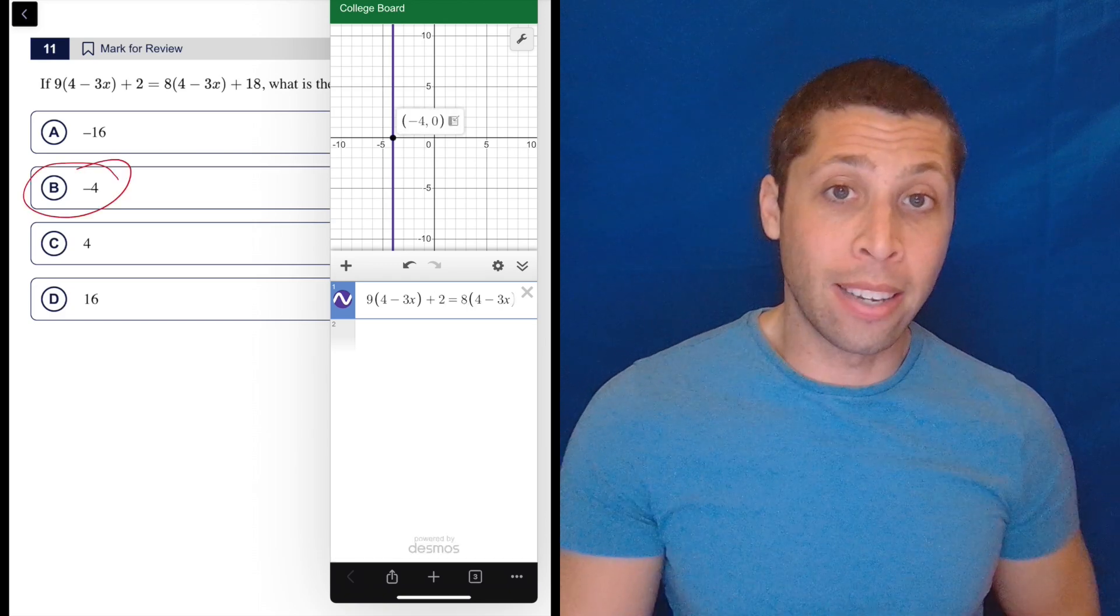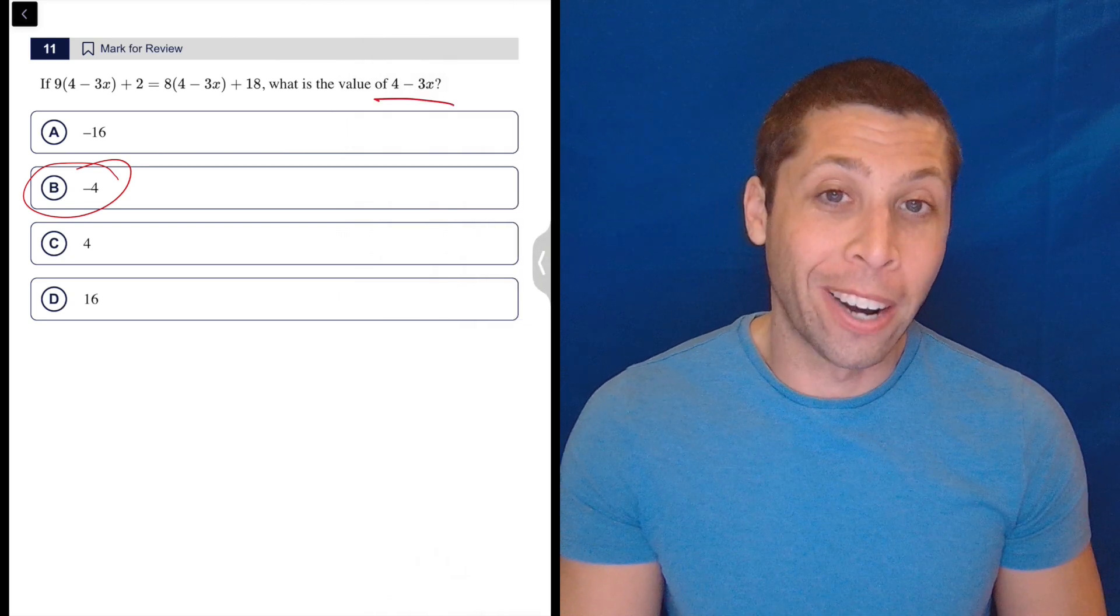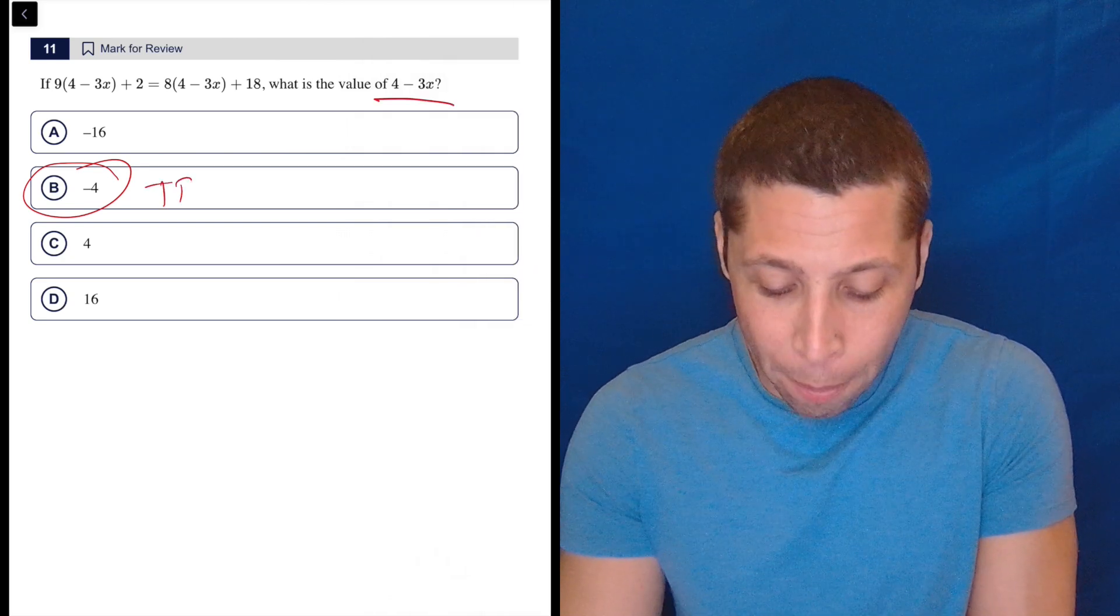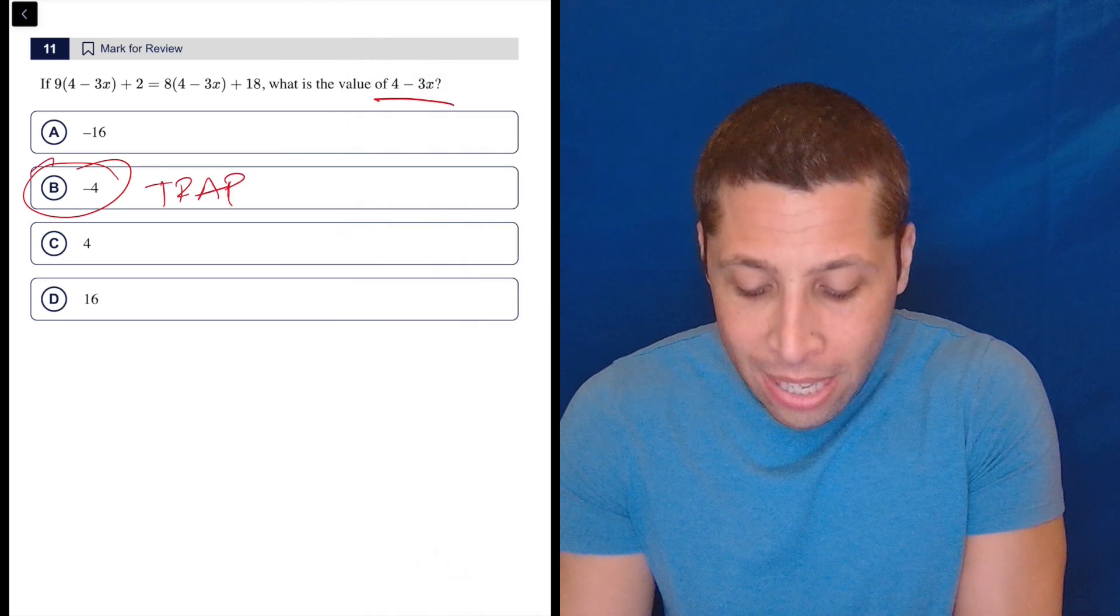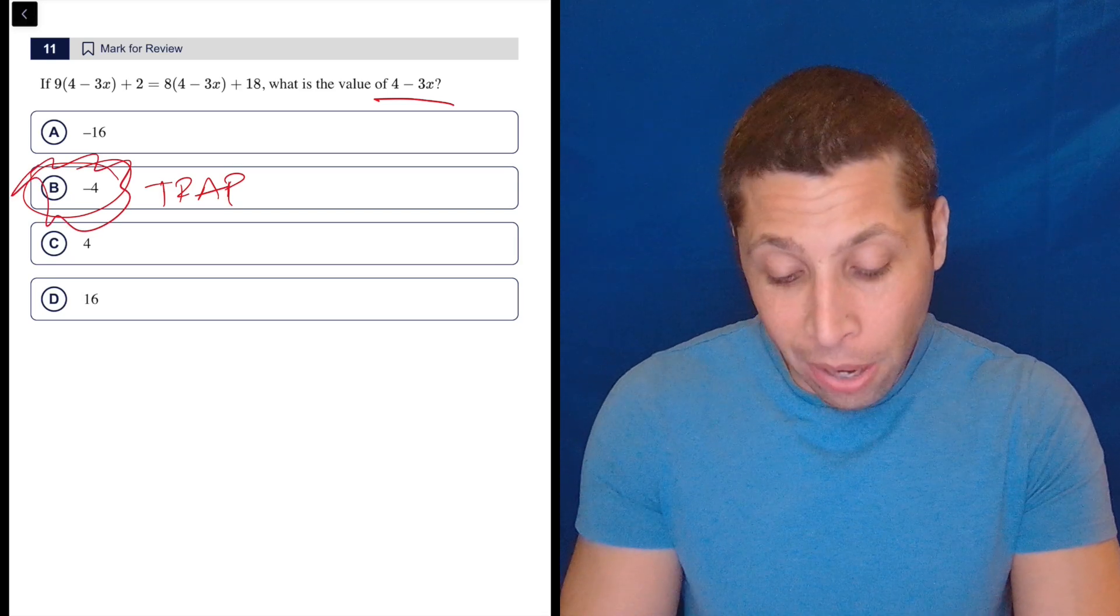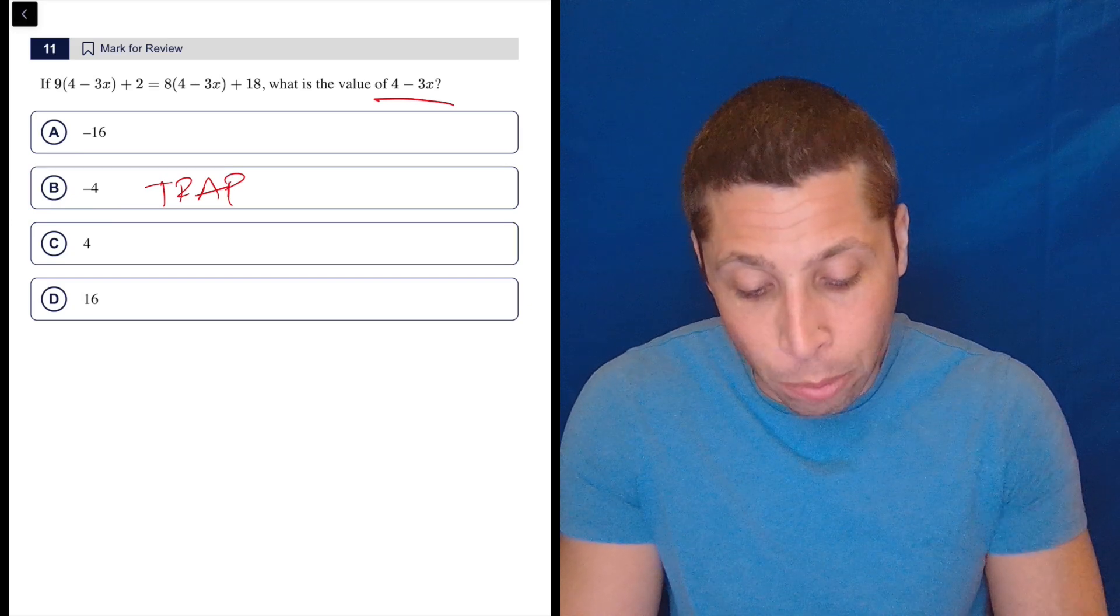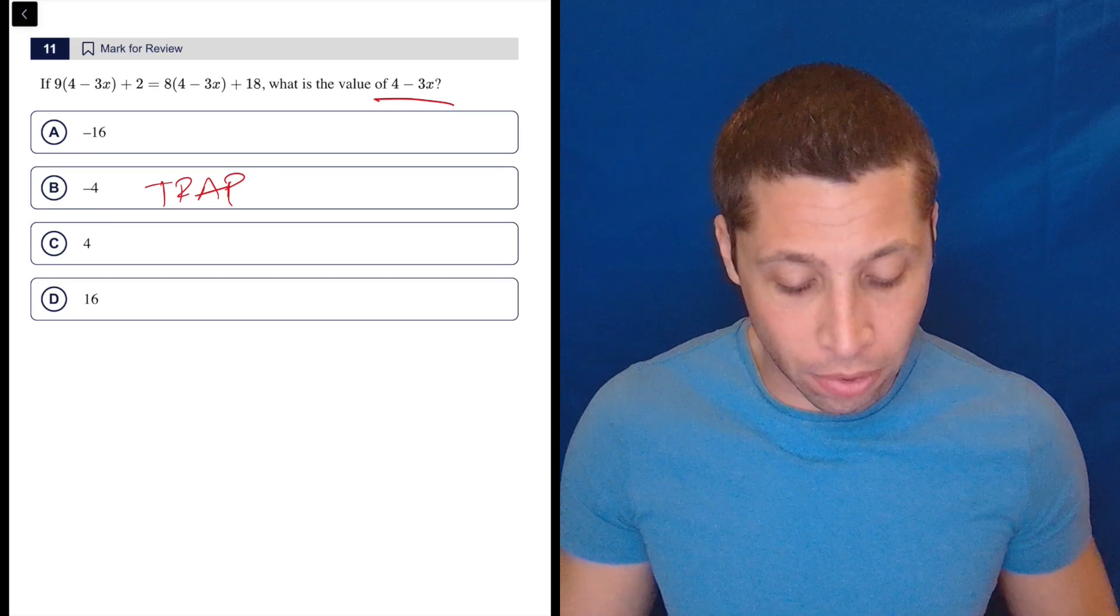And that is it done. Except that's not what they wanted, right? They wanted four minus three X. This is a trap. And it's so easy to fall for because we feel like we've accomplished something. Once we are done with algebra, we get our X equals moment, but the SAT knows that and they're going to take advantage of it.